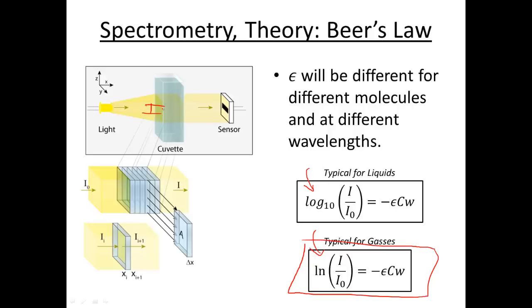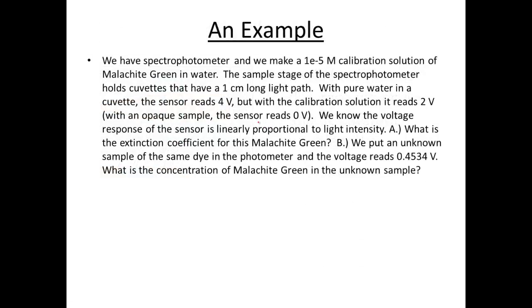We've come up with our equation. We know I-naught, we can get that. We know I. We know W. If we know molar absorptivity, we can get concentration. Let's do a little example. Let's say that we have a spectrophotometer and we make a 1 times 10 to minus 5 molar calibration solution, malachite green in water. We know it's one centimeter long. We put pure water in the cuvette, we end up with 4 volts in our detector. But with the calibration solution, we end up with 2 volts. With an opaque solution, so no light makes it through, we end up with 0 volts. And we know the response is linearly proportional to the light intensity. So effectively our volts, 2 volts divided by 4 volts is going to be our intensity coming out divided by intensity sub-zero. And now we want to know what is the extinction coefficient of malachite green.